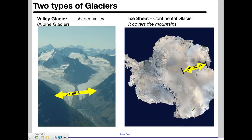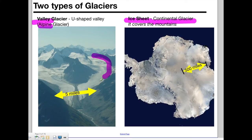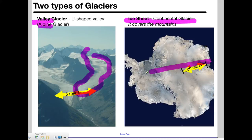On Earth you'll find two major types of glaciers: valley glaciers, also called alpine glaciers, and ice sheets, sometimes known as continental glaciers. Valley glaciers are small — they exist in the mountains. Ice sheets, like the continent of Antarctica, are one continuous block of ice from one side to the other. The entire continent of Antarctica, except for a few places, is completely covered in ice.